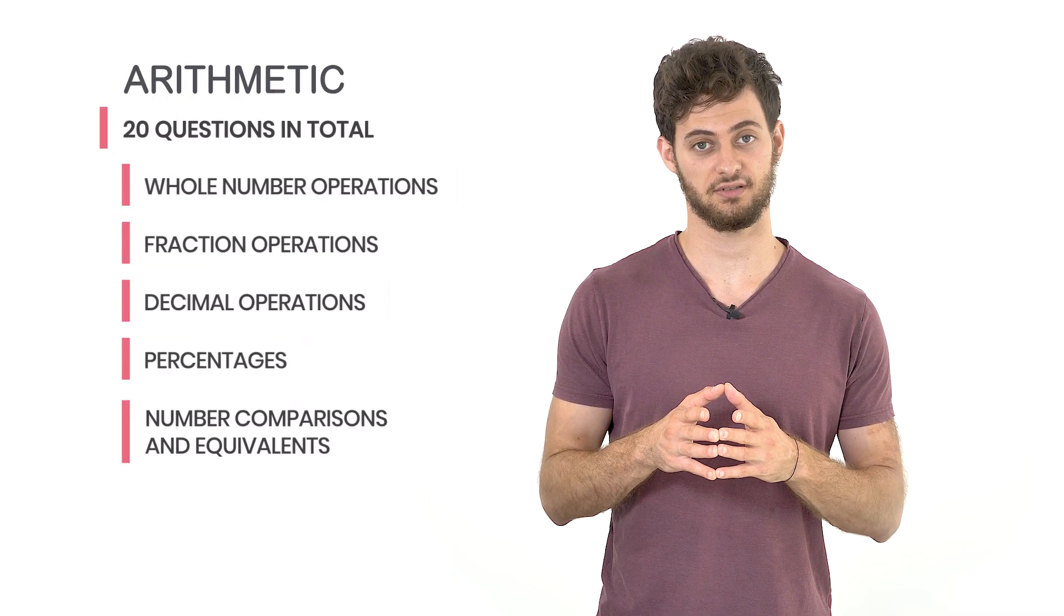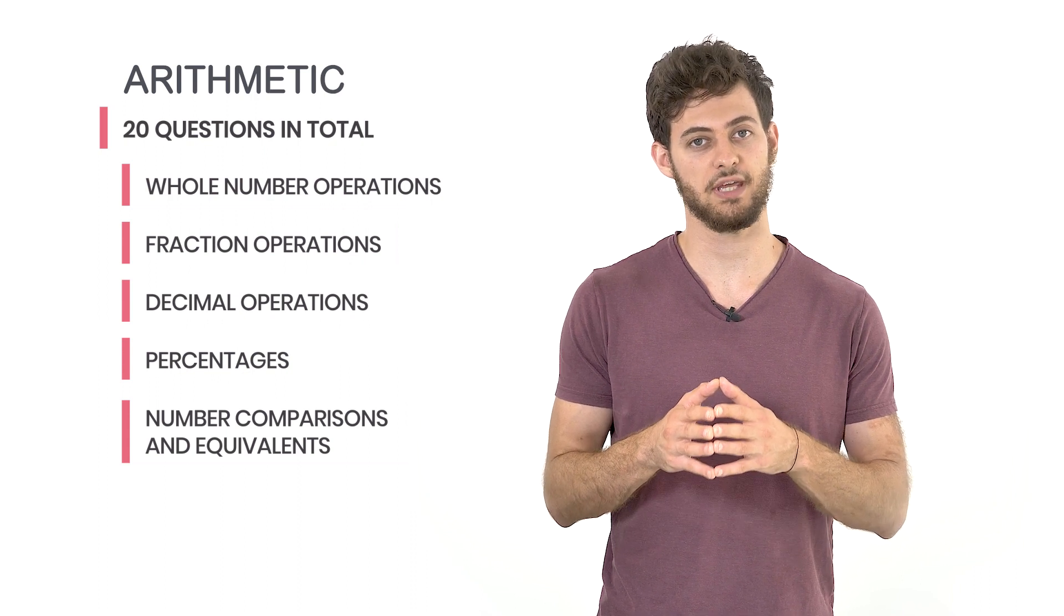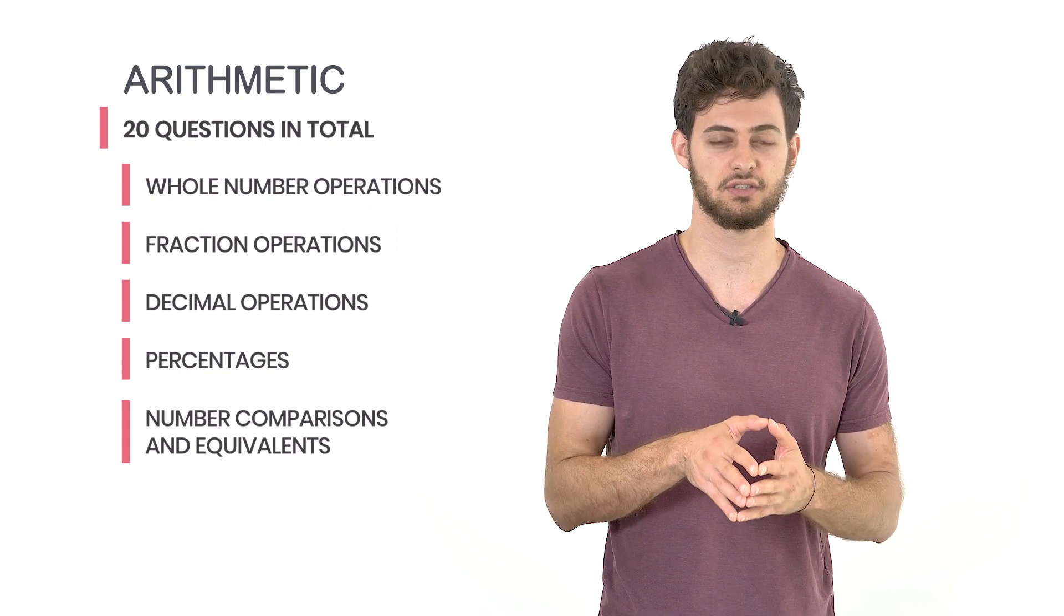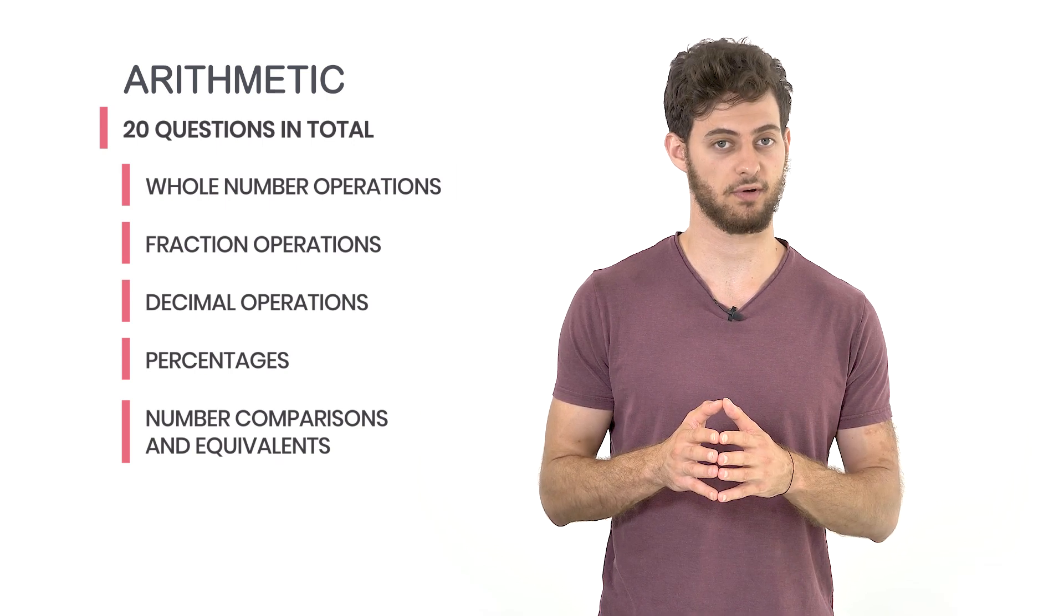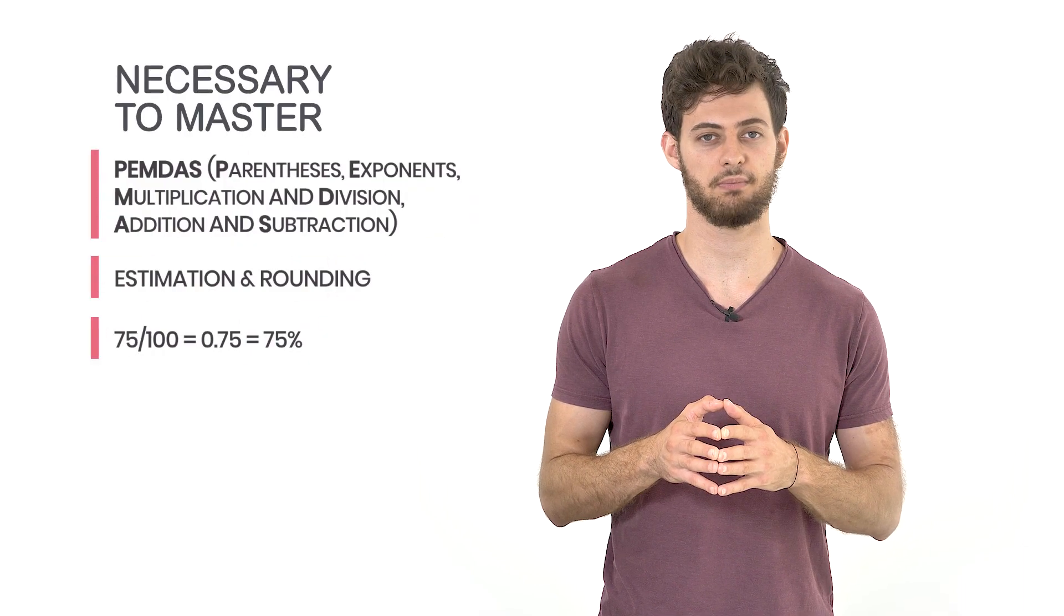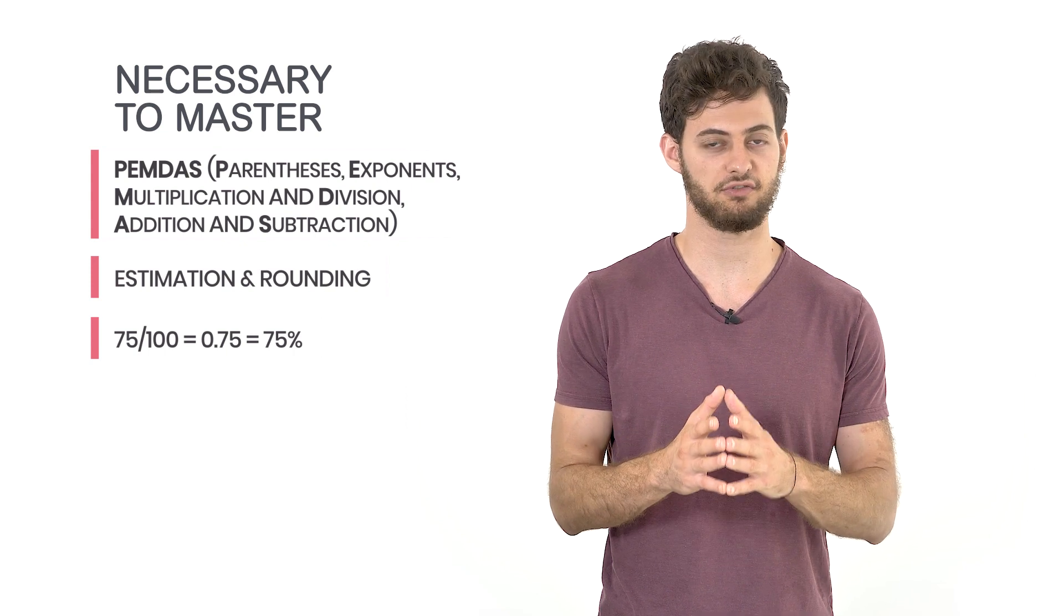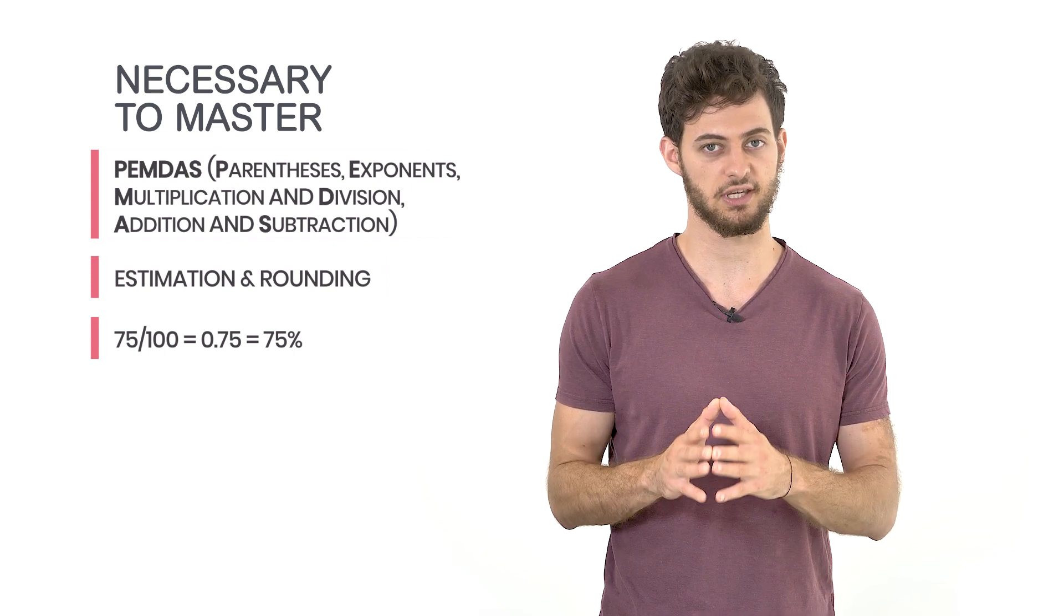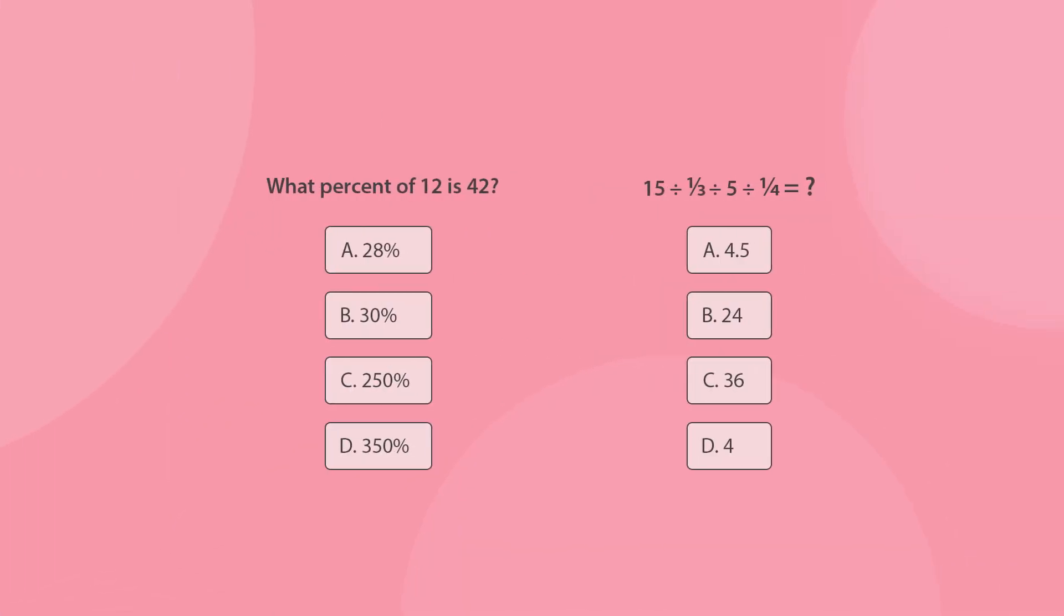Moving on to the arithmetic section, your knowledge will be tested with 20 questions involving operations with whole numbers, fractions, decimals, percentages, and number comparisons and equivalents. To score high on this section, it is crucial to remember order of operations, master estimation and rounding, and be able to convert between fractions, decimals, and percentages. Here are examples of typical arithmetic questions. Pause the video and try to answer them.